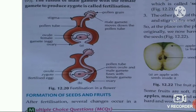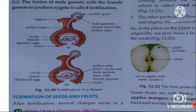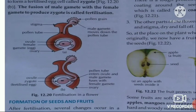The male gamete goes into the ovule and fuses with the egg cell, or female gamete. This fusion is called fertilization. After fertilization — after the fusion of the male gamete with the female gamete — a zygote is produced. In this manner, fertilization occurs.